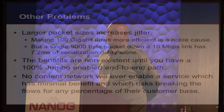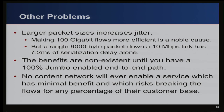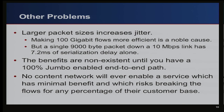Other problems people forget: larger packet size increases jitter. A 6x larger packet adds 6.2 milliseconds of serialization delay on even a 10 Mbps link at home. The benefits are completely non-existent until you have a 100% jumbo-enabled end-to-end path — if one piece in the middle doesn't support it, you gain nothing. No content network is going to risk rolling this out. The risk is breaking flows for customers in obscure ways where connections start to open, ramp up, and then fail — worst of all, completely unnecessarily.